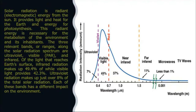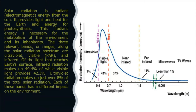Ultraviolet radiation B is responsible for the production of vitamin D in the skin. Ultraviolet radiation C is captured by the ozone layer, which is on the surface of the stratosphere at an elevation of on average 25 kilometers from the surface of Earth.